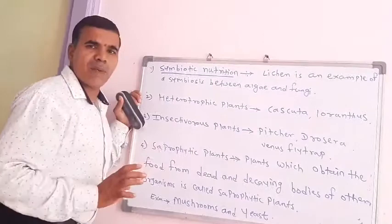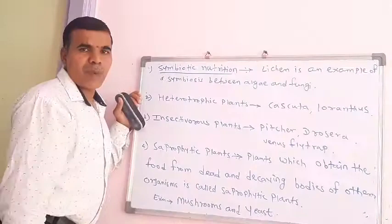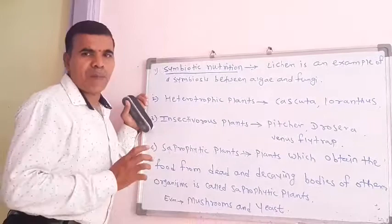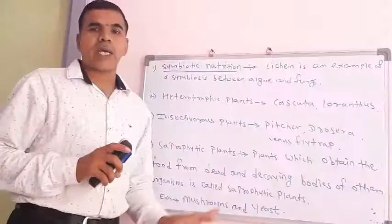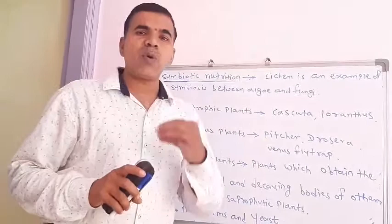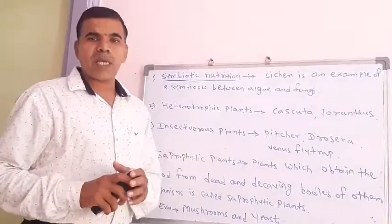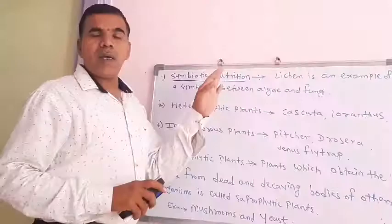Examples of saprophytic plants are Mushroom and Yeast. These are examples of saprophytic plants, meaning those plants that obtain food by using nutrients from dead and decaying bodies of other organisms.